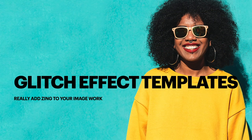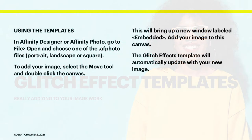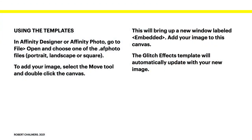Glitch effect templates are interesting — they really add zing to your image work. Like all good templates, you can change the image. Using the templates in Affinity Designer or Photo, go to File > Open and choose one of the photo files: Portrait, Landscape or Square. If you're in Designer it doesn't matter — it'll still open it, but you may find you'll need to be in pixel mode for anything to happen.